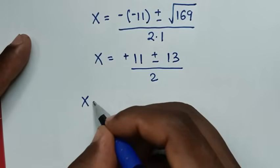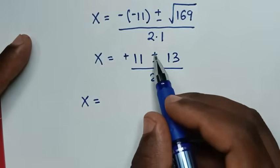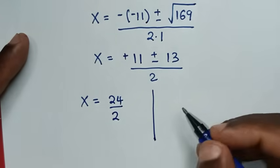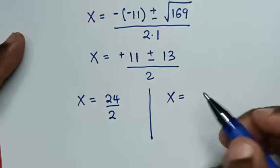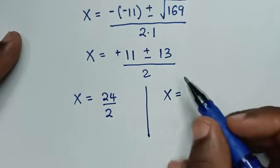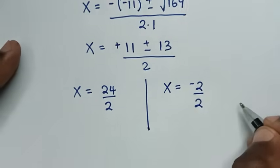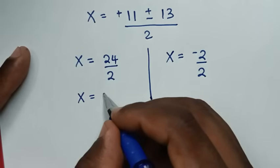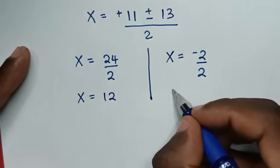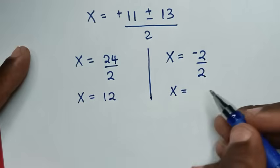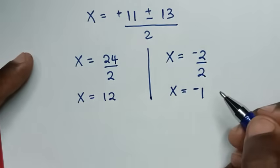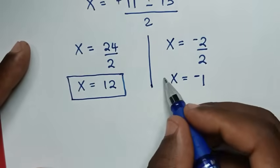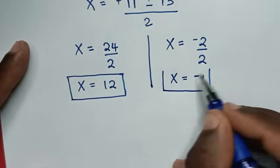So x equals (11 plus 13) over 2 equals 24 over 2 equals 12, and x equals (11 minus 13) over 2 equals negative 2 over 2 equals negative 1. Therefore the two values of x are x equals 12 and x equals negative 1.